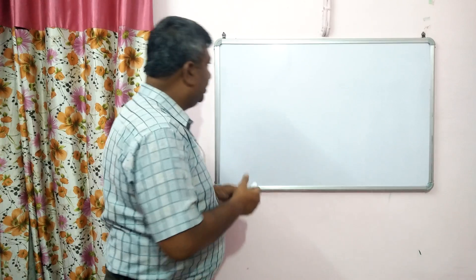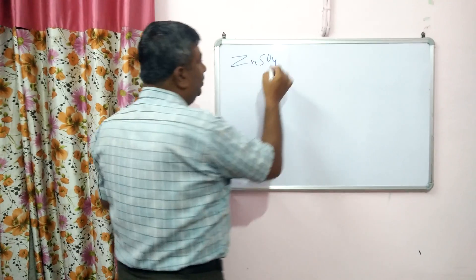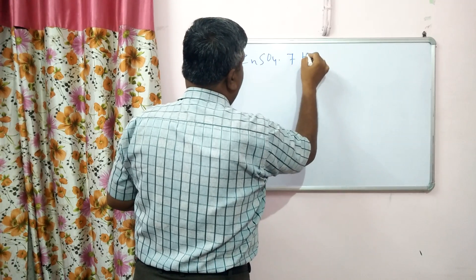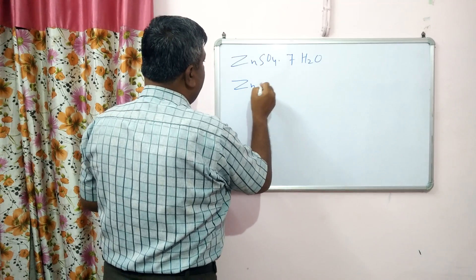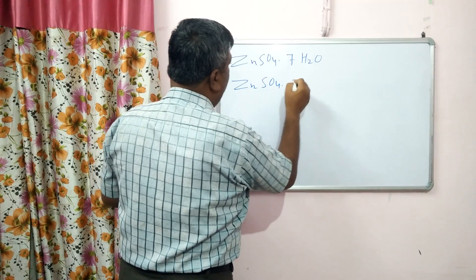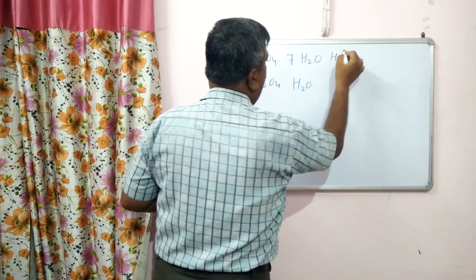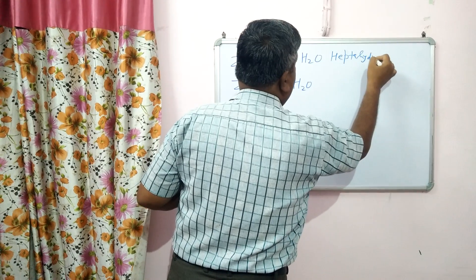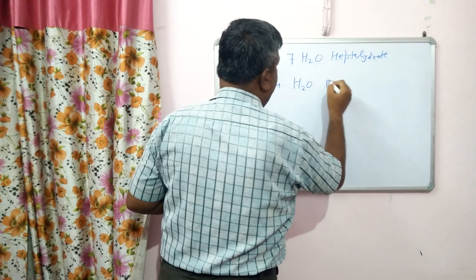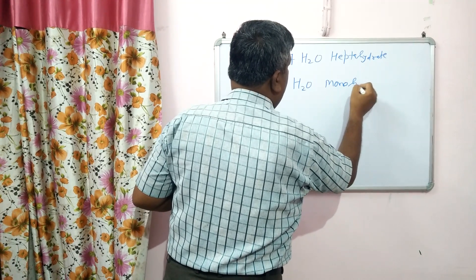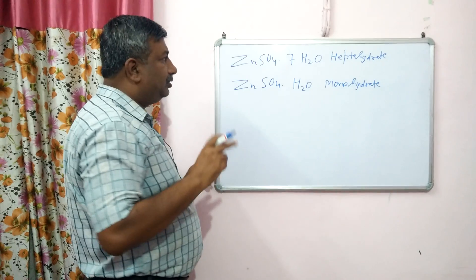Actually, zinc sulphate comes in two forms. The first is the heptahydrate form, ZnSO4·7H2O, and the second is ZnSO4 monohydrate. Hepta means 7 and hydrate means water, so it is heptahydrate and the other is monohydrate.